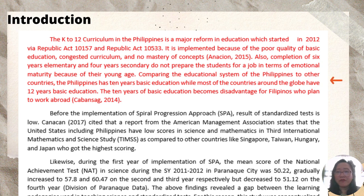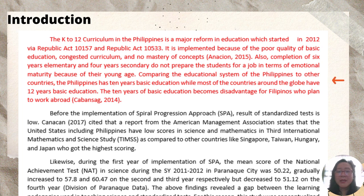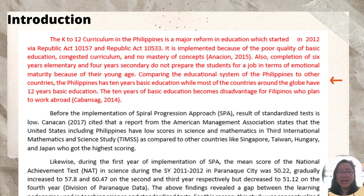This is an example of an overview of the research topic: The K-12 curriculum in the Philippines is a major reform in education, which started in 2012 via Republic Act 10157 and Republic Act 10533. It is implemented because of the poor quality of basic education, congested curriculum, and no mastery of concepts. Also, completion of six years elementary and four years secondary do not prepare the students for a job in terms of emotional maturity because of their young age. Comparing the educational system of the Philippines to other countries, the Philippines has 10 years of basic education while most countries around the globe have 12 years. The 10 years of basic education becomes a disadvantage for Filipinos who plan to work abroad (Kabansag, 2014).